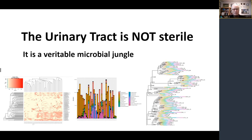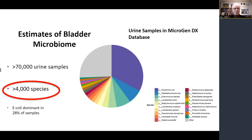In part one, we established, based on non-culture, next-generation sequencing and other novel, state-of-the-art technology, that we now know the urinary tract is not sterile. It is a variable microbial jungle. In 2020, we know that we can identify over 4,000 species within the bladder urine itself.